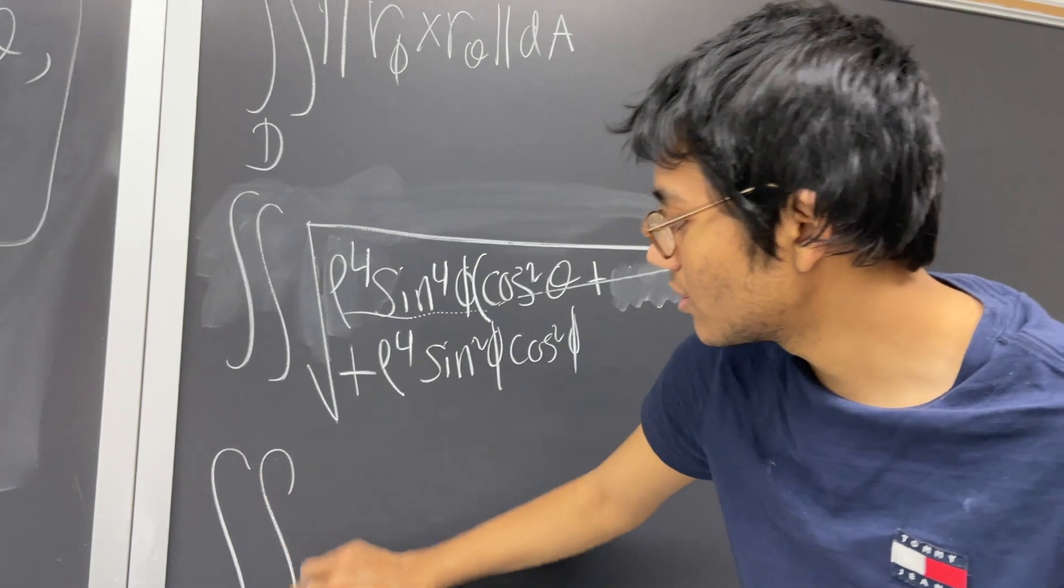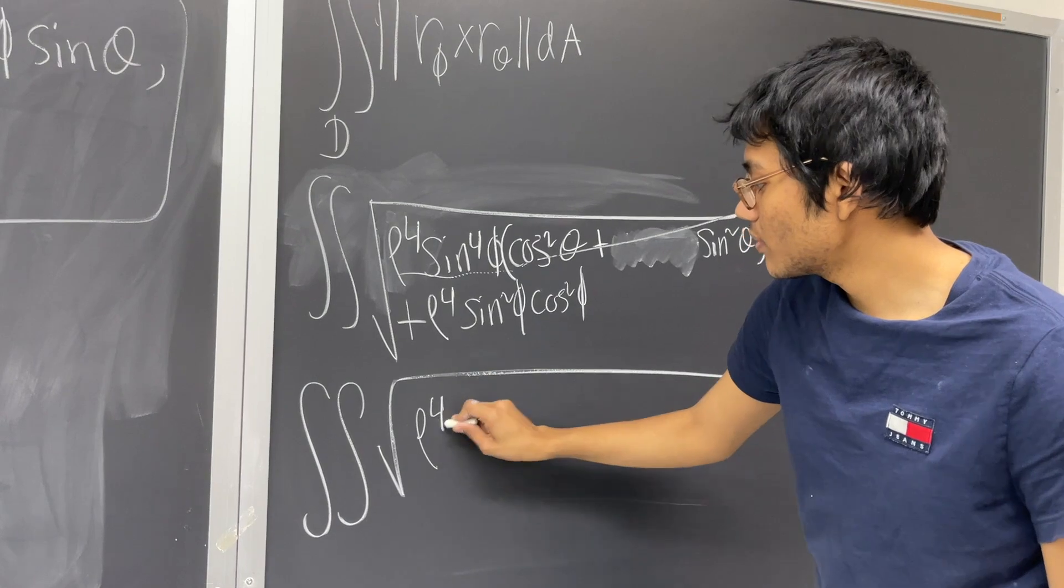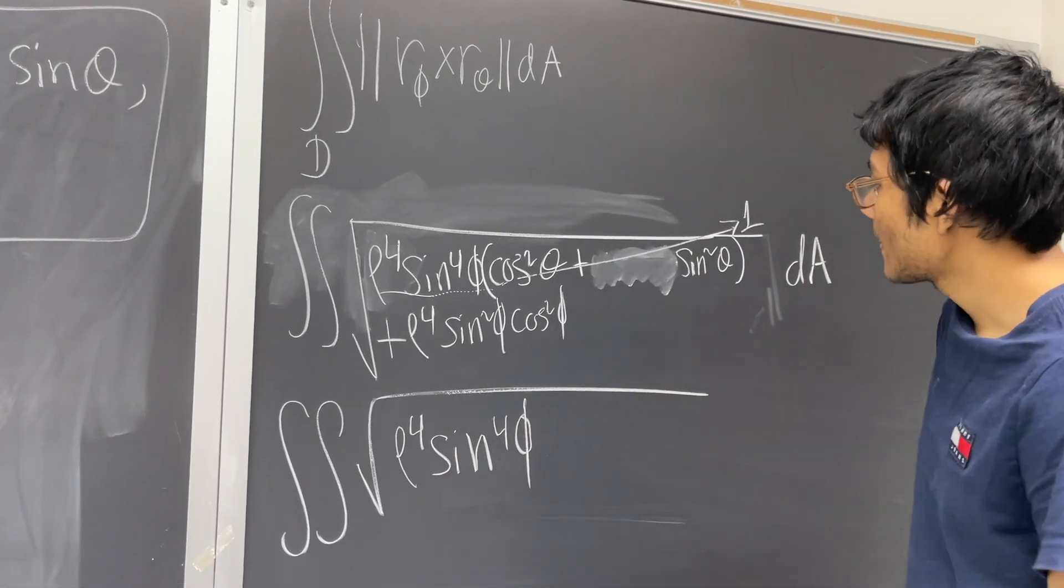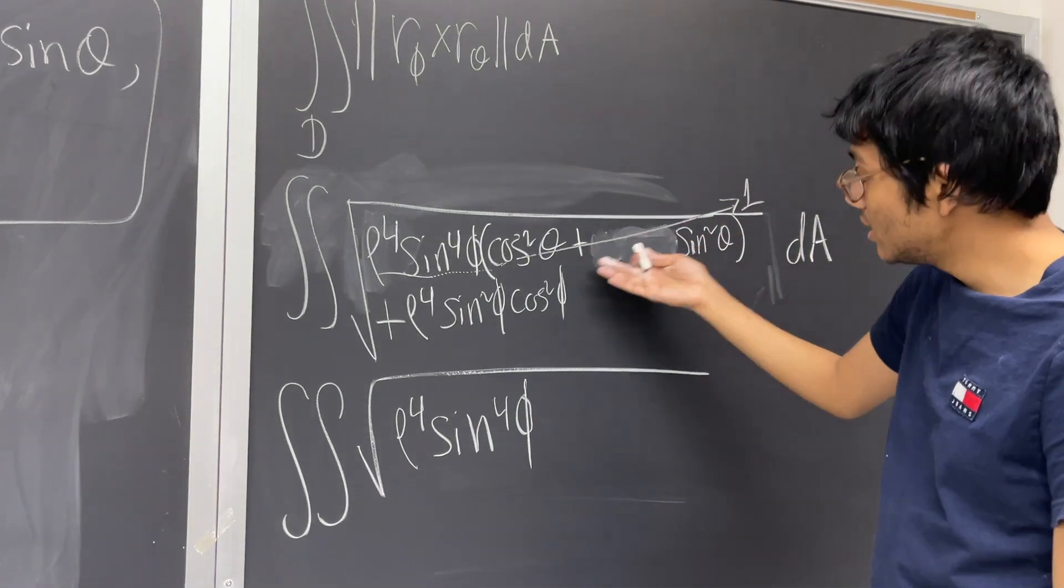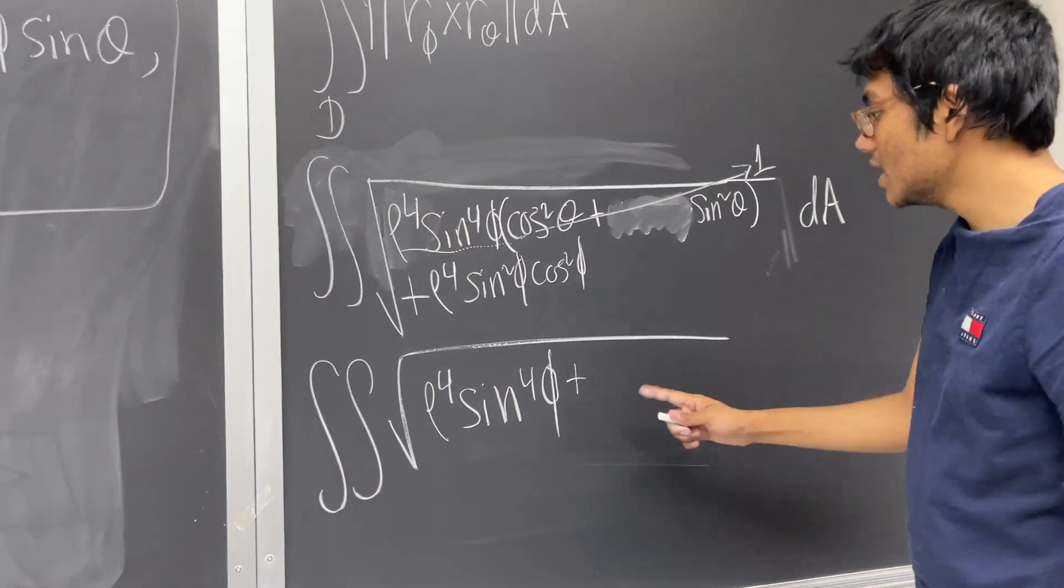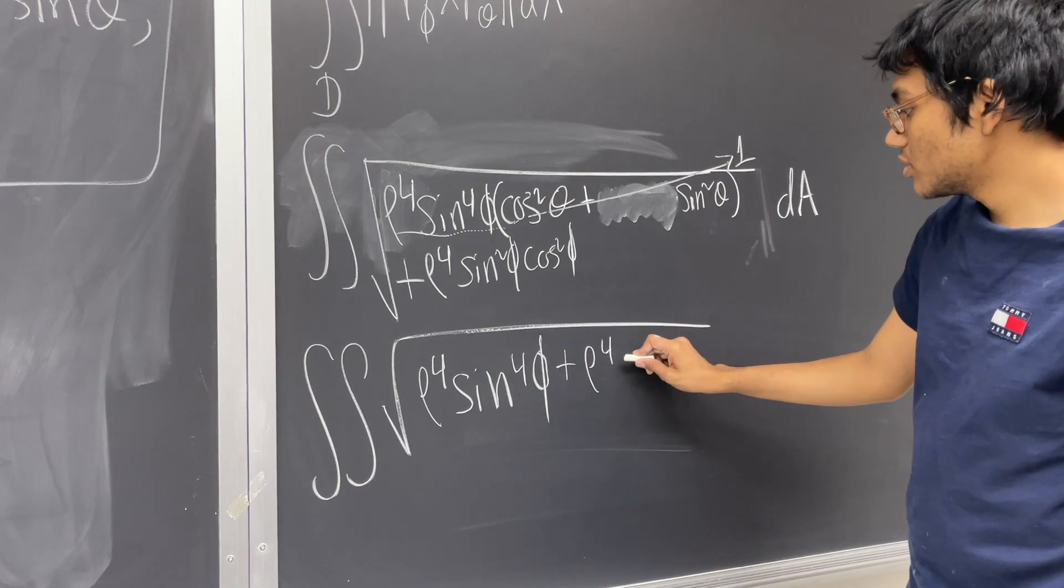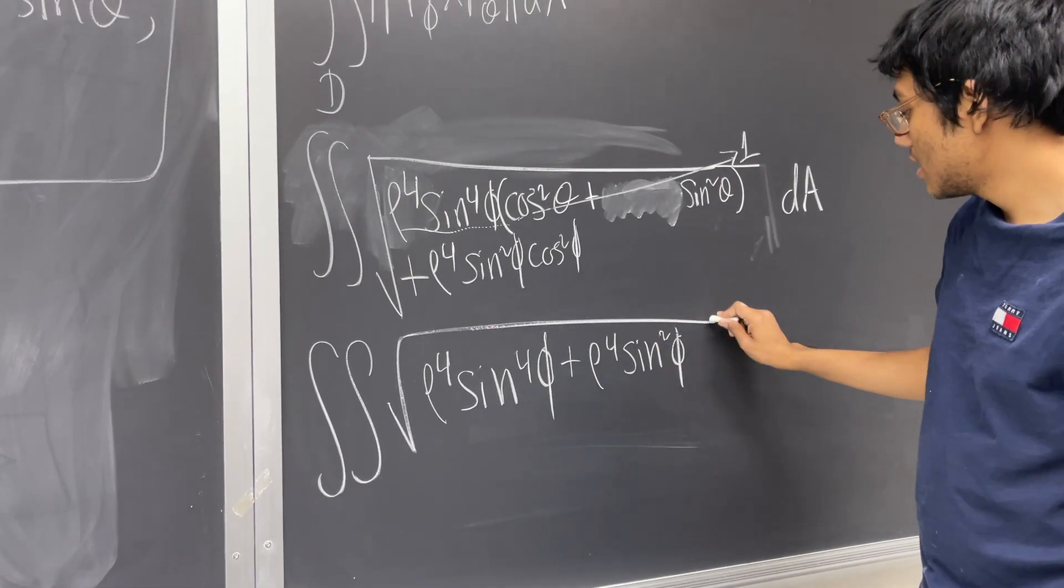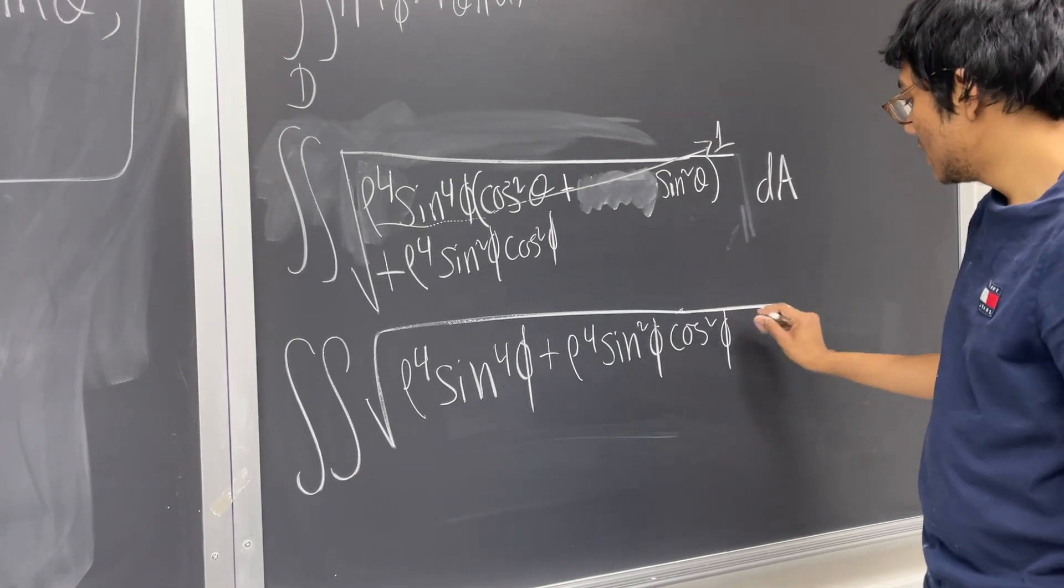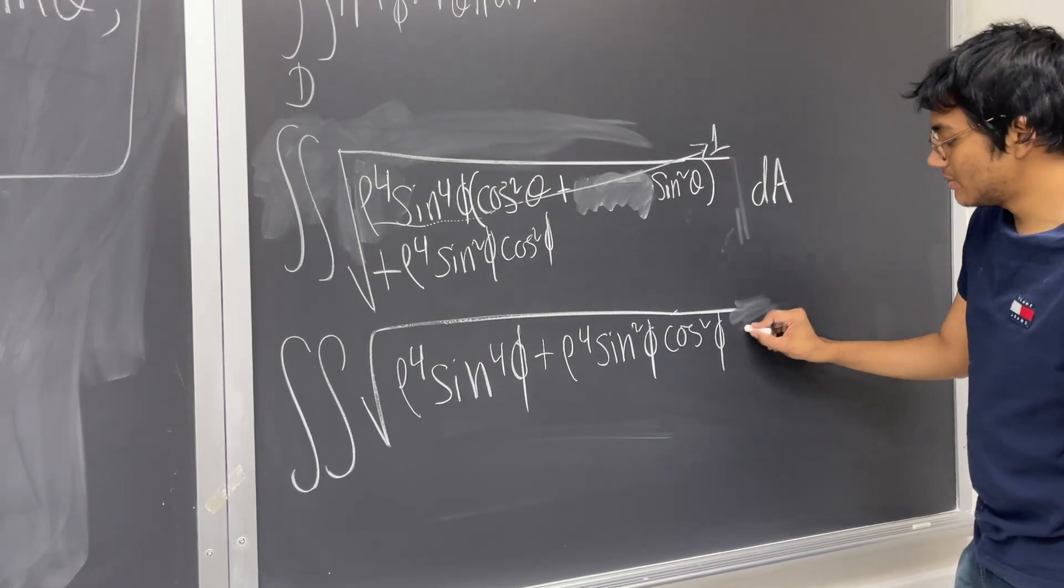And so what are we going to have, we're going to have the double integral of the square root of rho to the fourth power times sine to the fourth phi, times one, because we factored out the sine squared theta and the cosine squared theta, plus rho to the fourth sine squared phi, times dA.